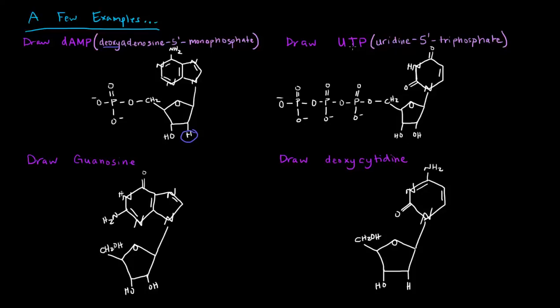Now what if you're asked to draw UTP, which is uridine five prime triphosphate? Well, there's no deoxy, so we'd expect the ribose. That's why we have this OH here instead of an H at the two prime carbon. And then of course it's uridine. So the nitrogenous base attached to the one prime carbon should be uracil, and that's what we have here. And at the five prime end, we should have three phosphate groups. So there's one, two, three phosphate groups. So that's UTP.